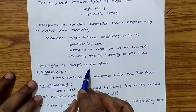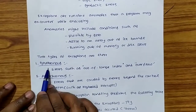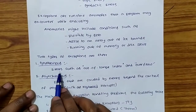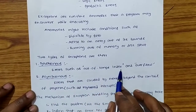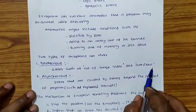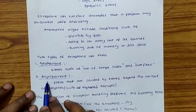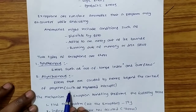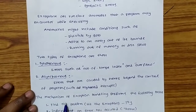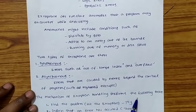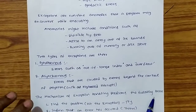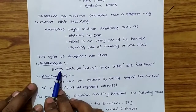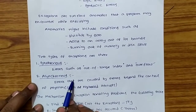There are two types of exceptions. The first one is synchronous exceptions and the second one is asynchronous exceptions. Synchronous exceptions are errors such as out-of-range index, overflow, and division by zero. Asynchronous exceptions are errors caused by events beyond the control of the program, such as keyboard interrupts or hardware failure. Exception handling mechanism is used to handle synchronous exceptions only, not asynchronous exceptions.